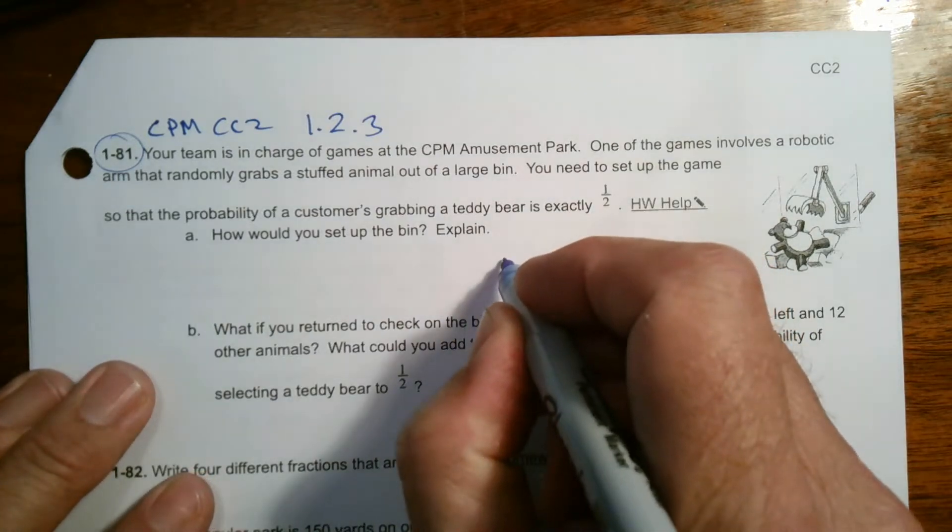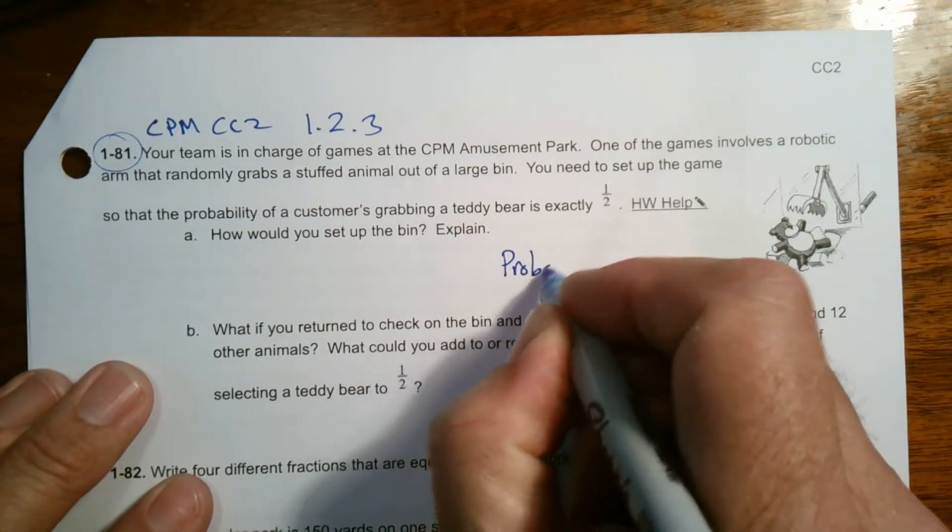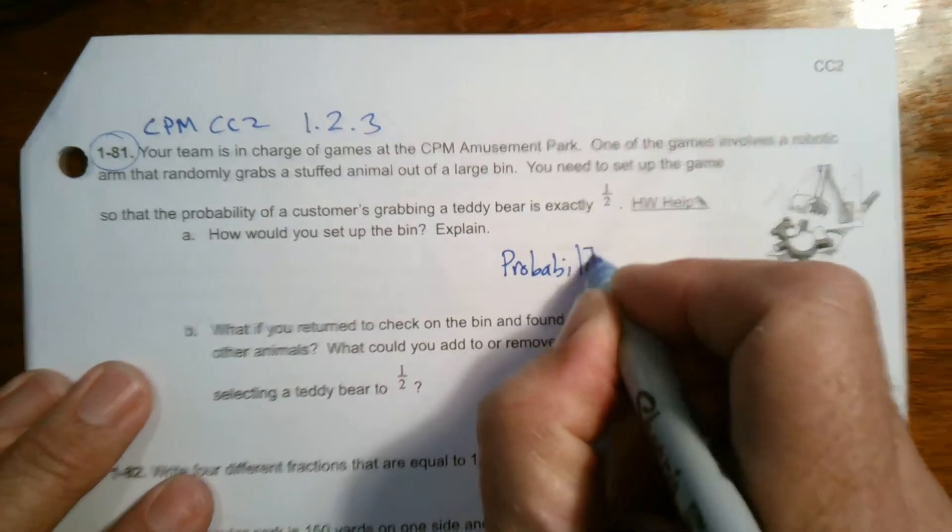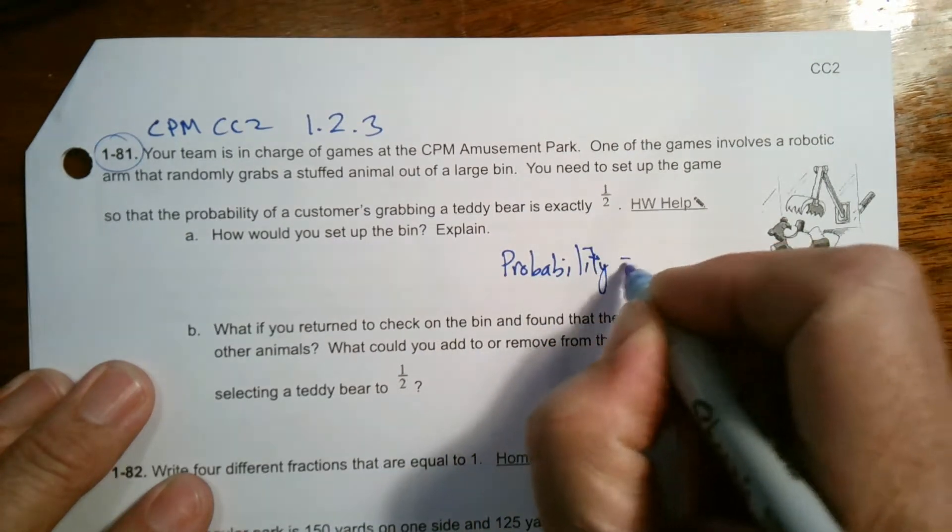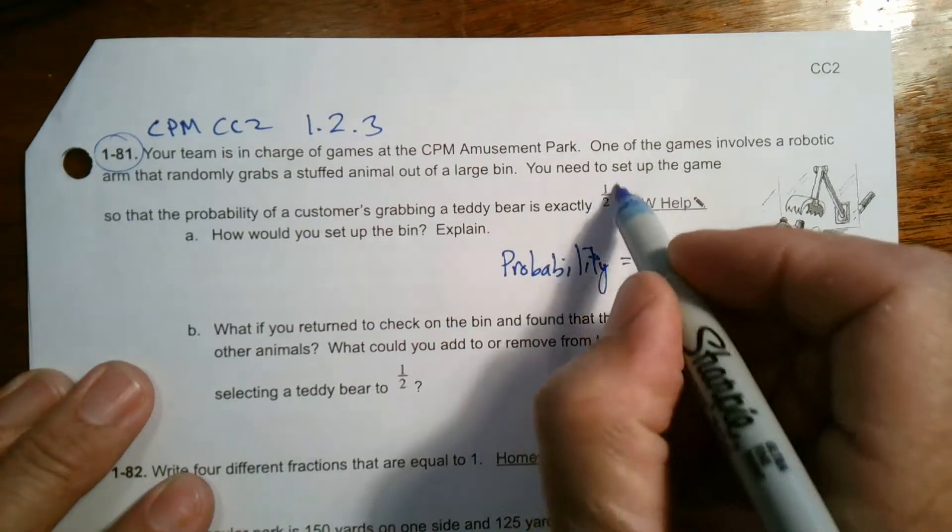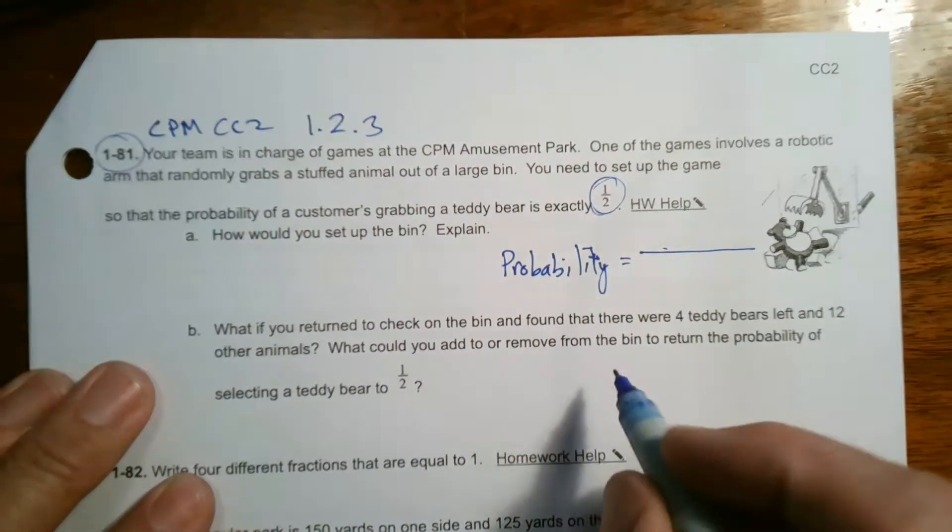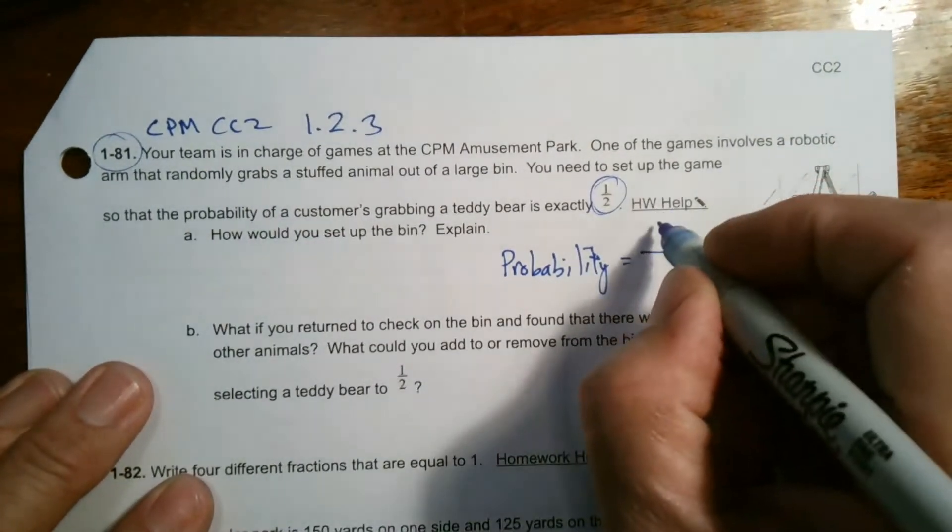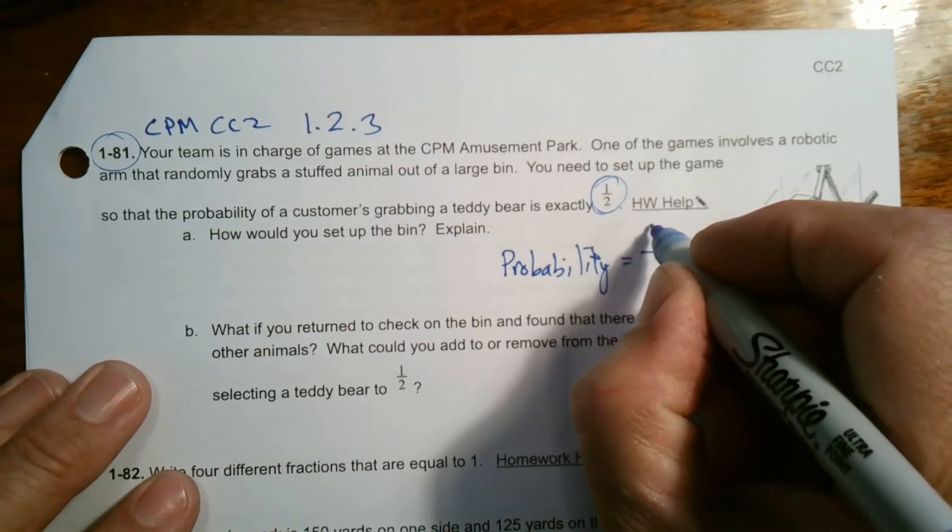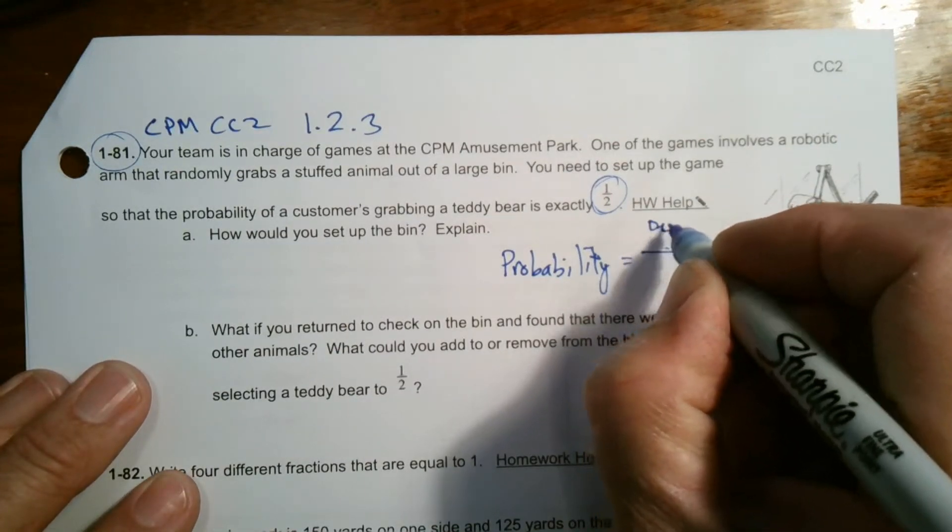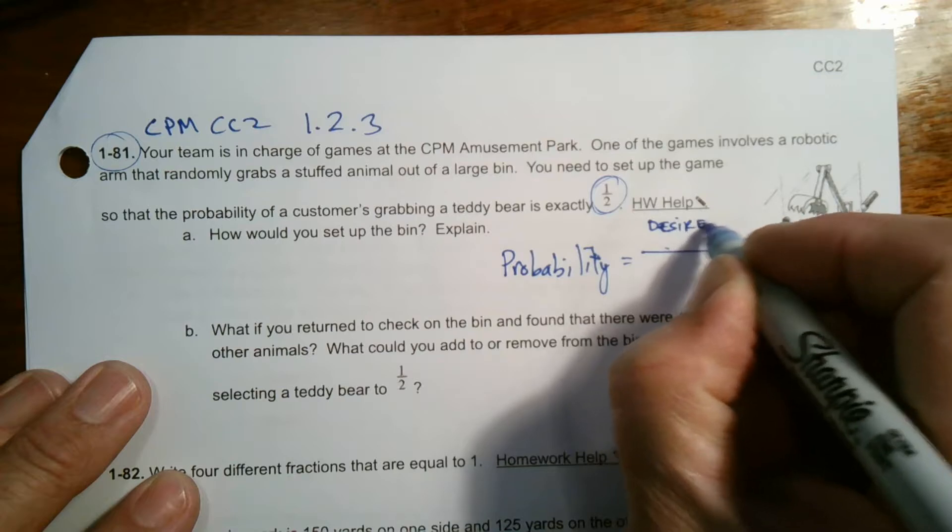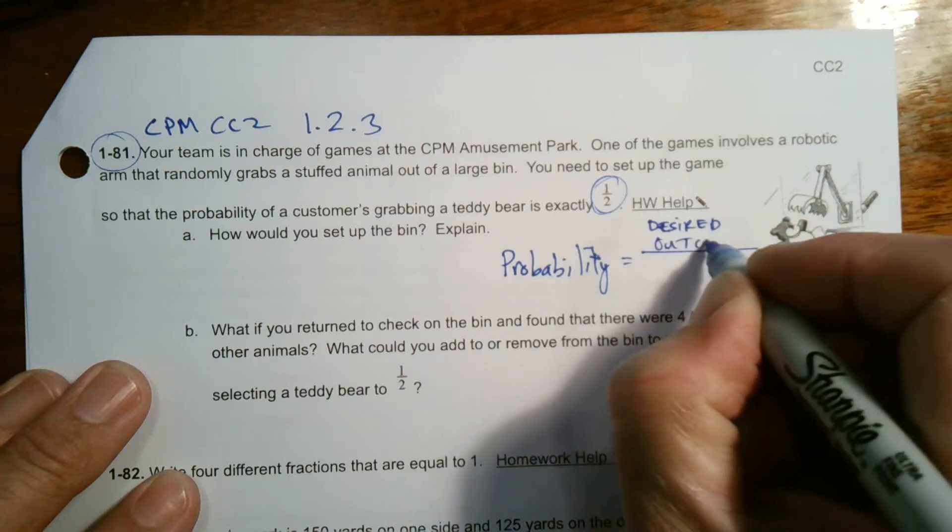So if we remember, just as a review, probability is always set up as a fraction. What's the number on top? The number on top is always the desired outcome.